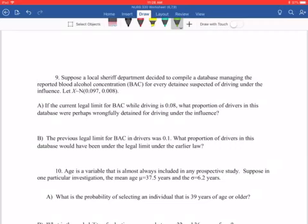Number 9. Suppose the local sheriff's department decides to compile a database managing the reported blood alcohol concentration, or BAC, for every detainee suspected of driving under the influence. So we let X distribute as a normal distribution of 0.097 with a standard deviation of 0.008. Part A says if the current legal limit for BAC while driving is 0.08, what proportion of drivers in this database were perhaps wrongfully detained for driving under the influence.